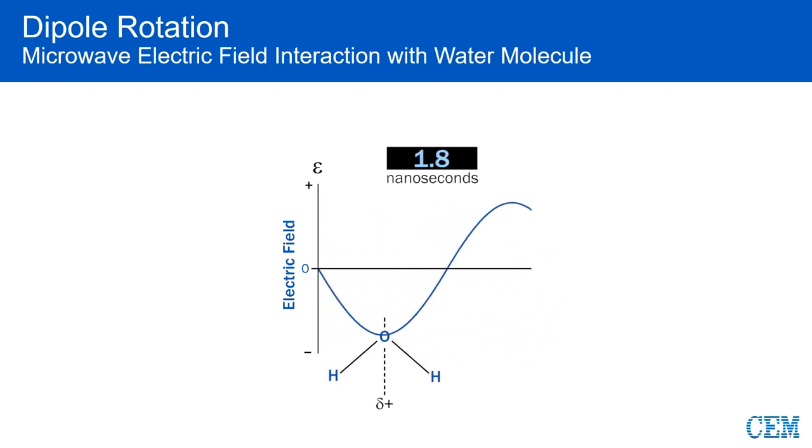So it will rotate to attempt to realign itself. But the field keeps rapidly moving, causing the molecule to rotate back and forth continuously.